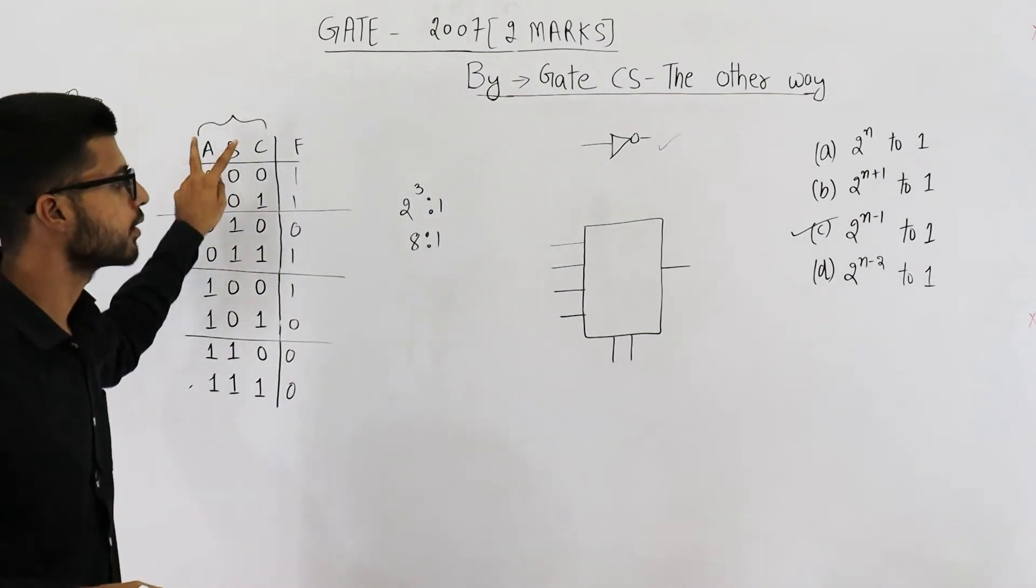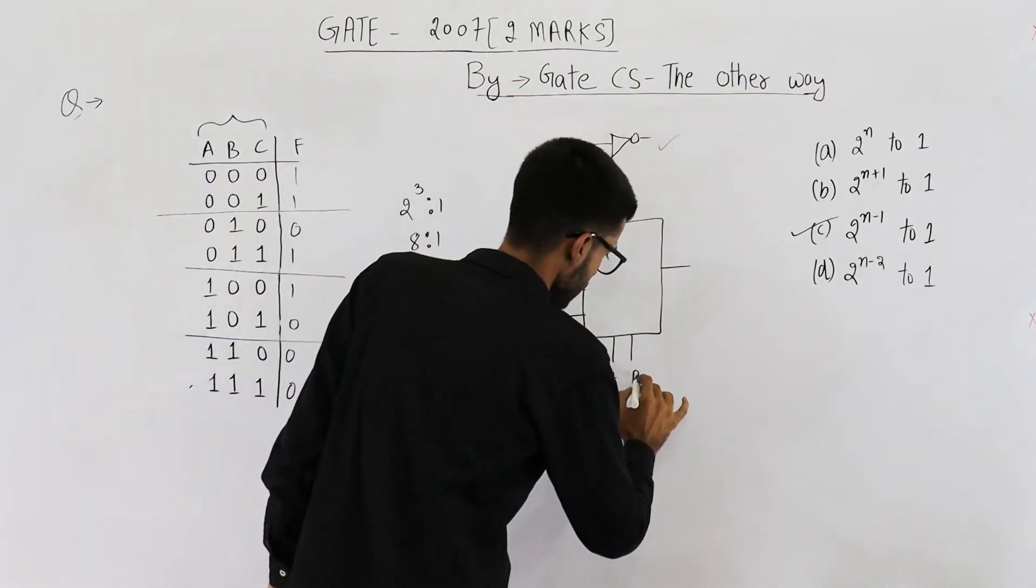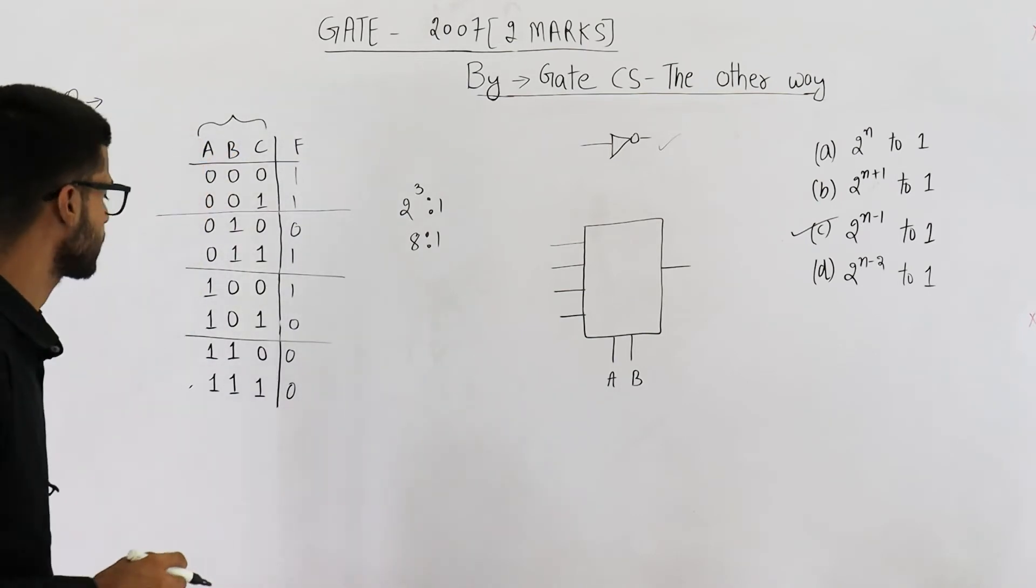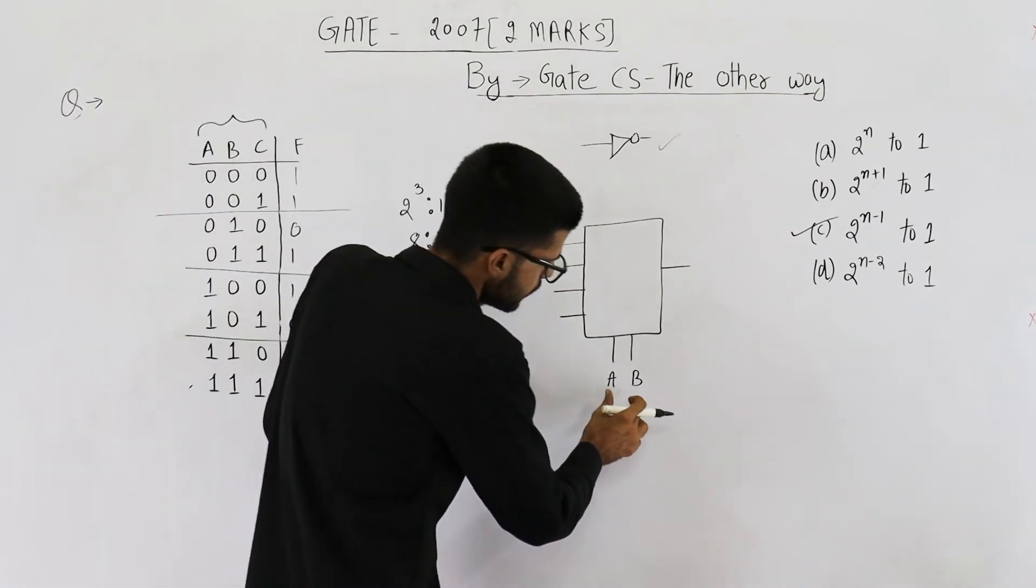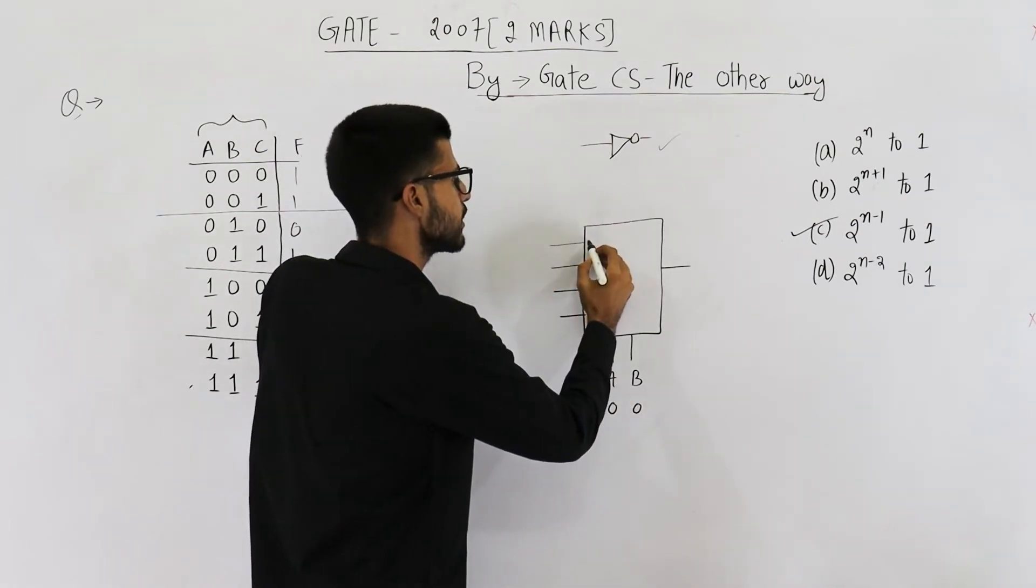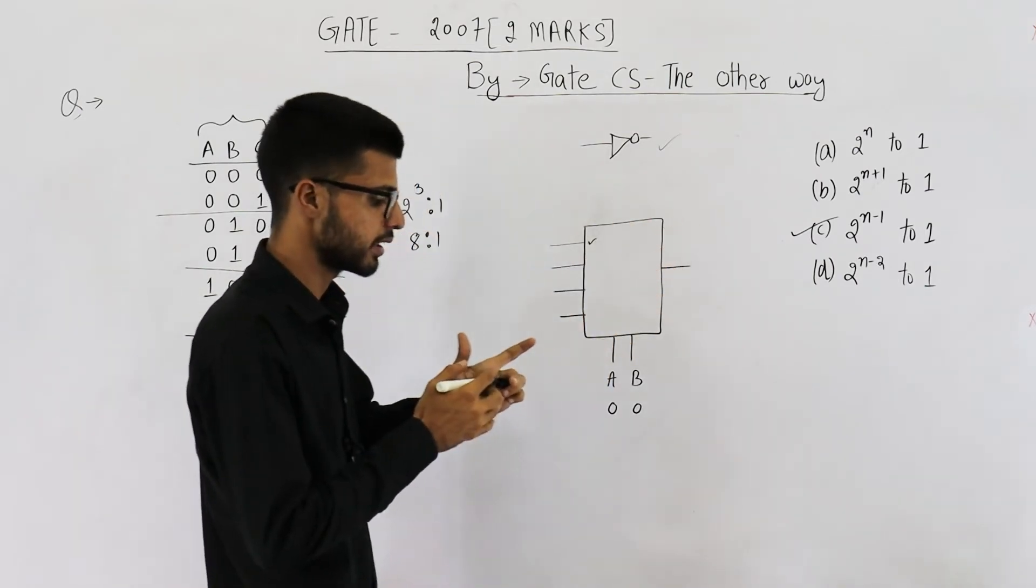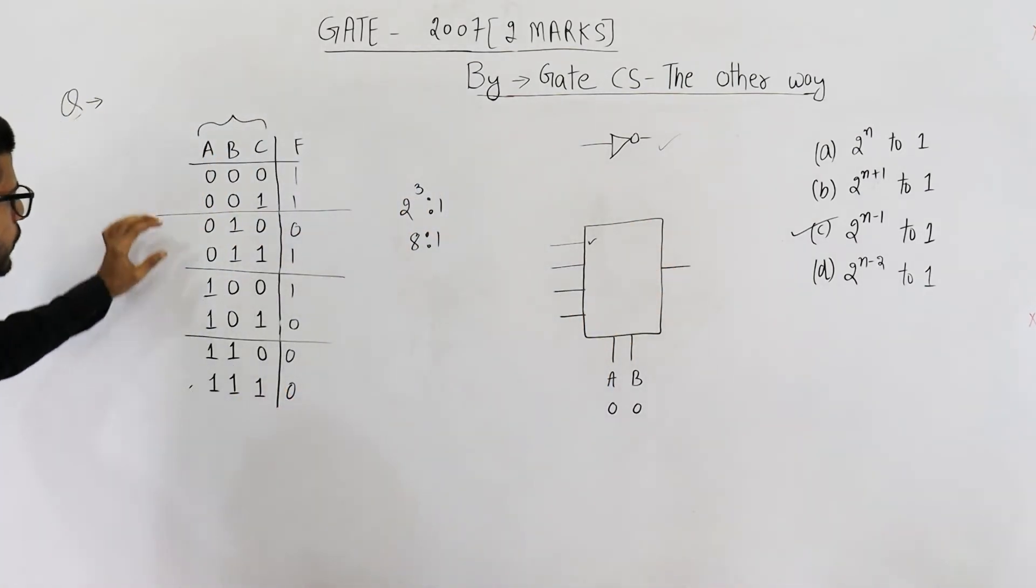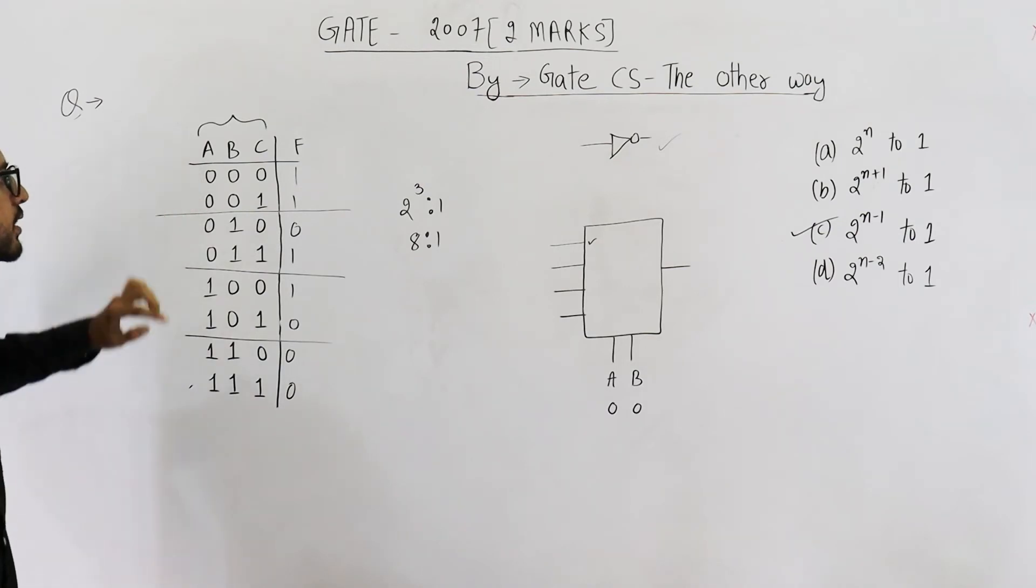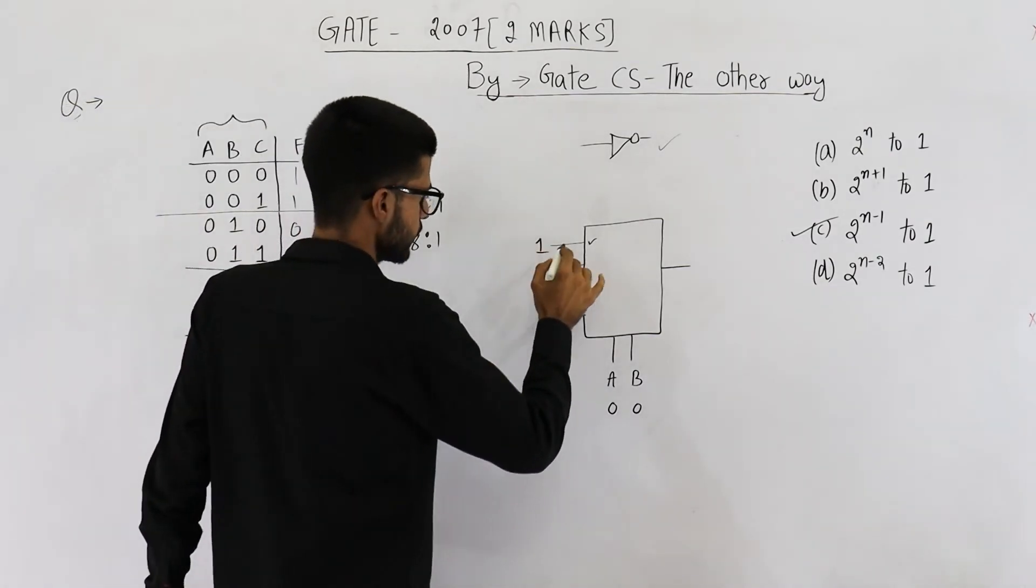So two of the variables I am choosing them as select line. Earlier all three variables were the select line. Now only these two variables are select line. Whenever the value of a and b is zero zero. In that case multiplexer will select this input as the output. That means whatever is connected here will be given as the output. You can see whenever a and b are zero zero. In both of these cases the output needs to be one. So you can simply connect one here.